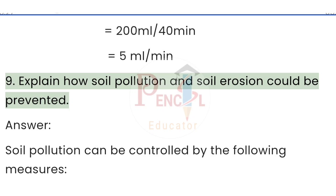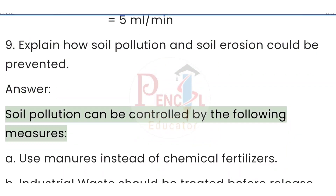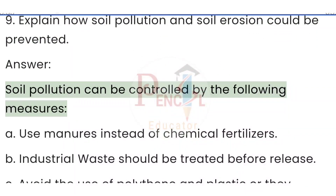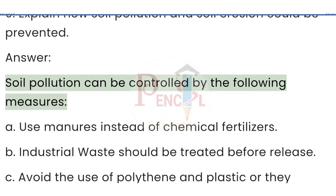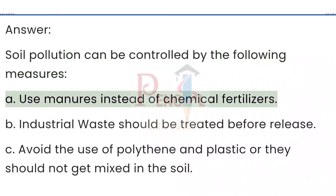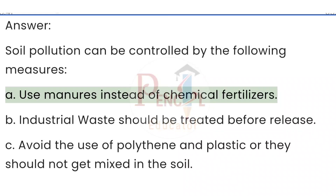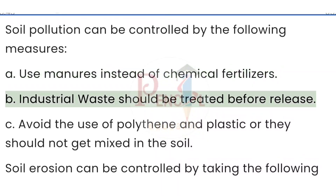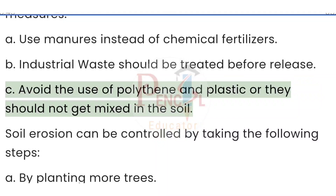Question 9: Explain how soil pollution and soil erosion could be prevented. Answer: Soil pollution can be controlled by — (a) using manures instead of chemical fertilizers, (b) industrial waste should be treated before release, (c) avoid the use of polythene and plastic, or they should not get mixed into the soil.